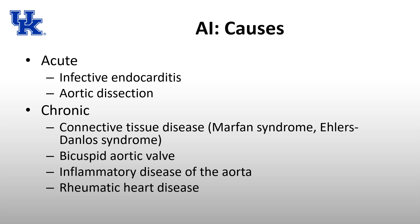Bicuspid aortic valve — traditionally we think of aortic stenosis, but it can also result in aortic insufficiency. Different inflammatory diseases of the aorta and rheumatic heart disease can also cause AI. Rheumatic heart disease affects the mitral valve more frequently, but it can also affect the aortic valve and result in aortic insufficiency, though we're seeing it less and less over time.